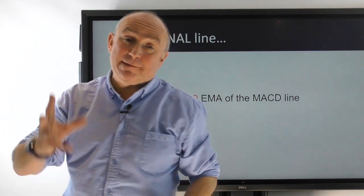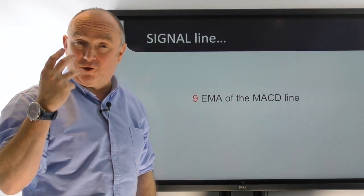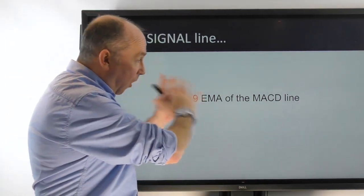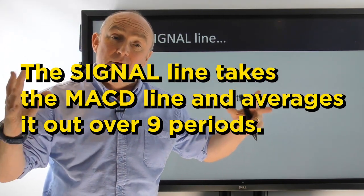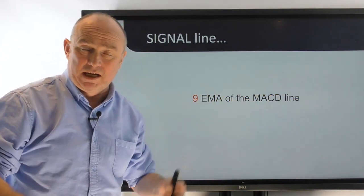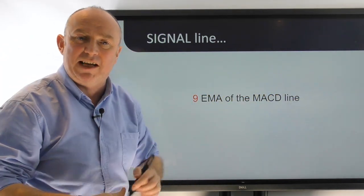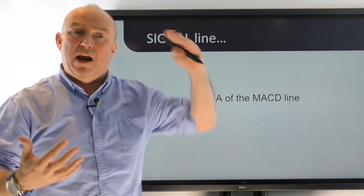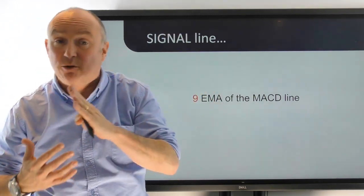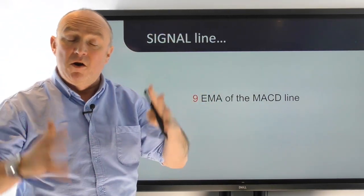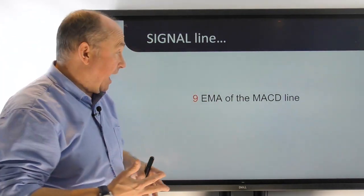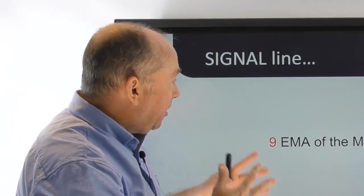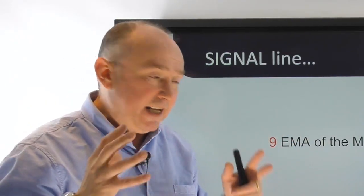The signal line is basically a 9-period exponential moving average of the MACD line. So it takes the MACD line and averages it out over a nine-period look-back. Nine is the common default you'll see when you load it up. The relationship between the MACD line and the signal line — whether it's crossing above or below — gives us our signals for when to buy, when to sell, and when trends may be changing direction.